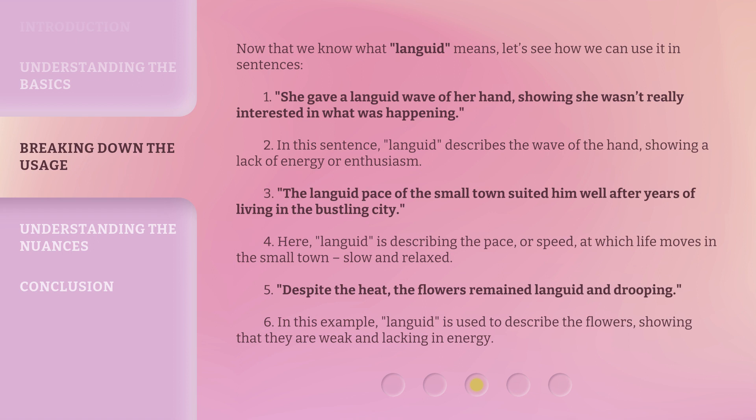Three: 'Despite the heat, the flowers remained languid and drooping.' In this example, 'languid' is used to describe the flowers, showing that they are weak and lacking in energy.